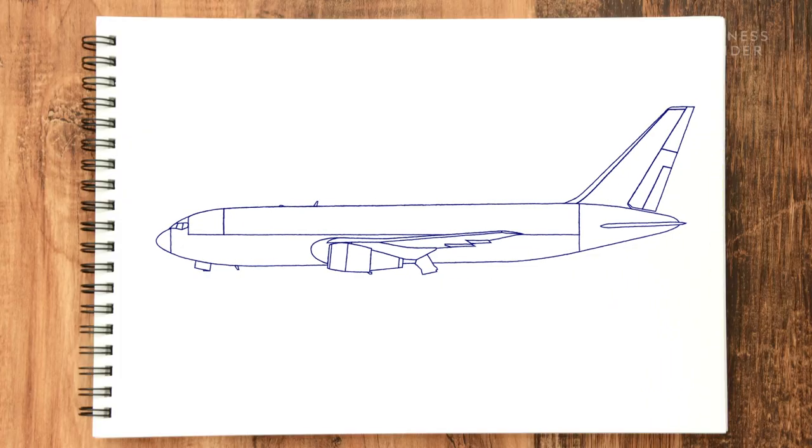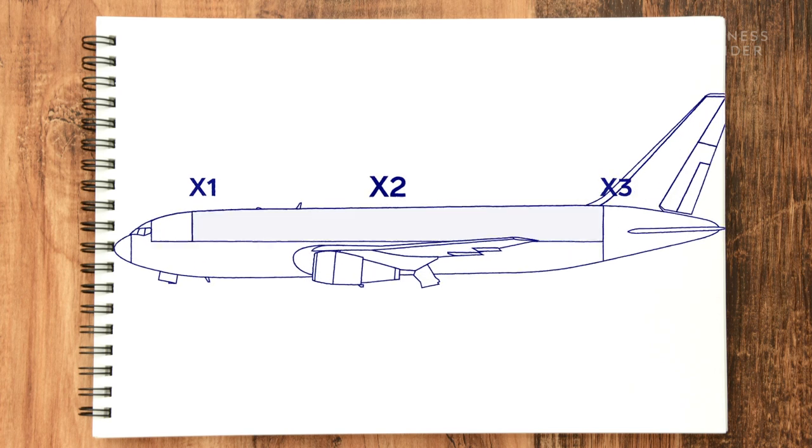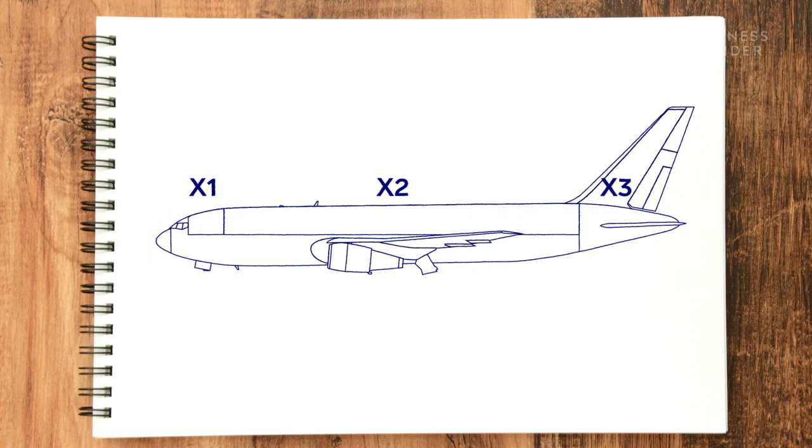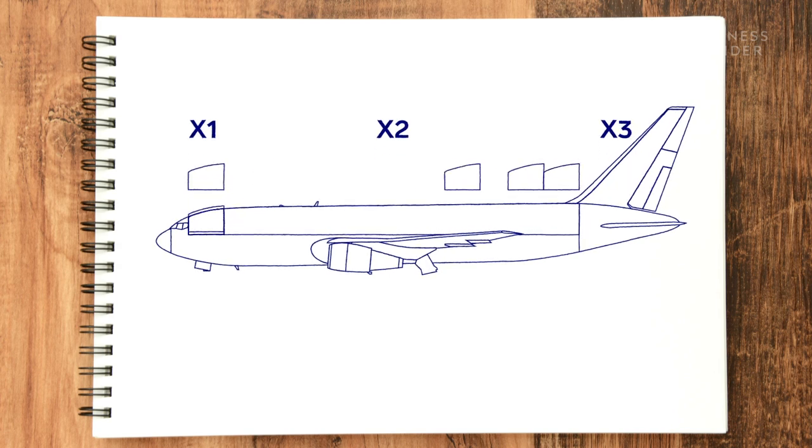Now we have to think about the cockpit, meal prep areas, and bathrooms. X2 is 52 rows plus the space on top, so I'll say at least 10 fit in there. Typically in a building, about 40% of space goes to infrastructure like mechanical systems and plumbing. So 353,650 divided by 10 gives us 35,365.